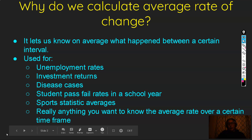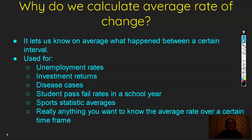Why do we calculate average rate of change? Well, it lets us know on average what happens between a certain interval. For instance, it's used for unemployment rates — we can say on average the unemployment rate between 2008 and 2012 was 8%, or on average the unemployment rate was 10% in the last decade. The same thing for investment returns — the last century investment returns for the Nasdaq were 8%, or for the S&P 500 in the last 10 years the average return was 9%.